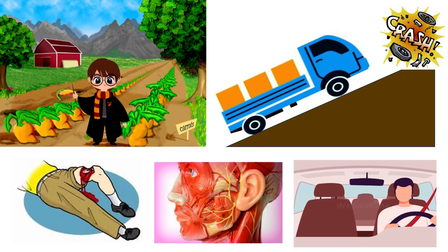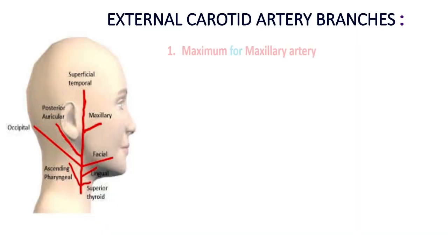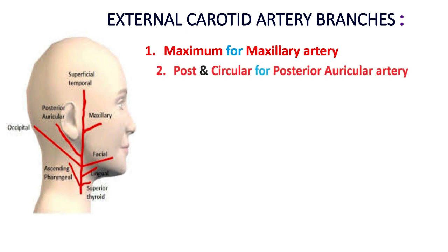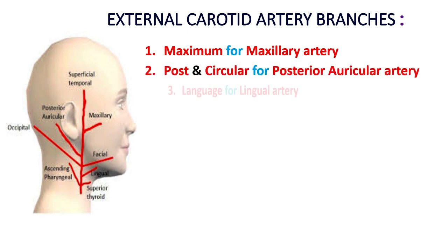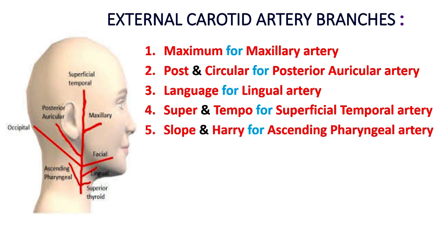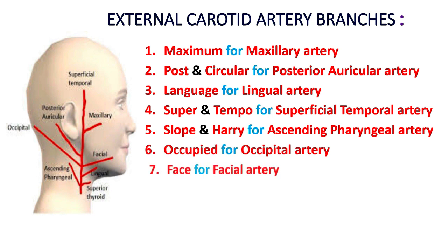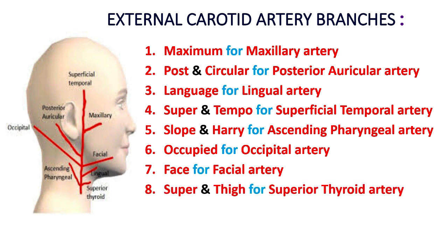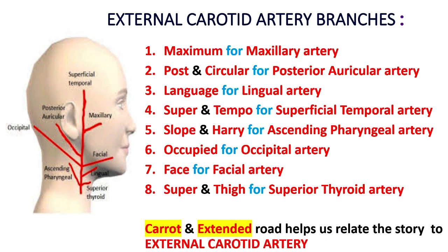We are through with the story. Time to connect the story to the branches of external carotid artery. 'Maximum' is for maxillary artery. 'Post' and 'circular' for posterior auricular artery. 'Language' for lingual artery. 'Super' and 'tempo' for superficial temporal artery. 'Ascending,' 'slope,' and 'hairy' for ascending pharyngeal artery. 'Occupying' for occipital artery. 'Face' for facial artery. Lastly, 'super' and 'thigh' for superior thyroid artery. 'Carrot' and 'extended road' helps us relate to external carotid artery.